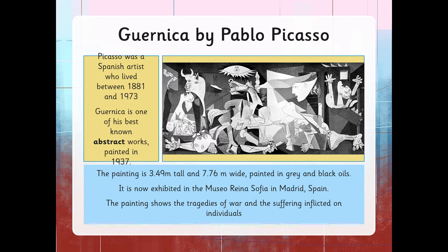Picasso was a Spanish artist who lived between 1881 and 1973. Guernica is one of his best-known abstract works which he painted in 1937. The painting is 3.49 metres tall and 7.76 metres wide. Your school desks are about a metre long, so that means this painting is about three and a half desks tall and nearly eight desks wide.